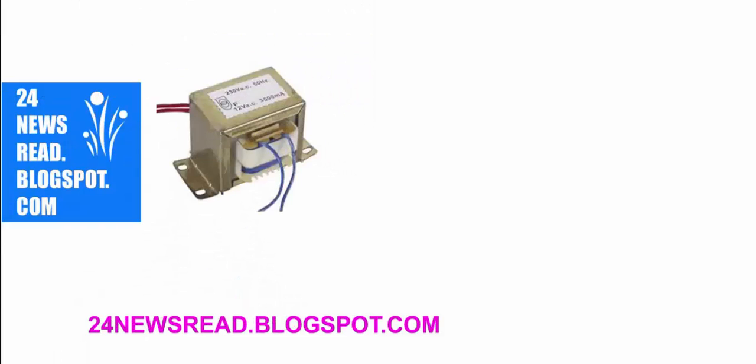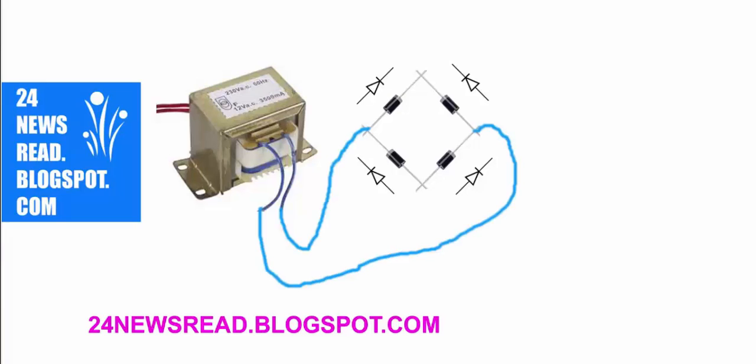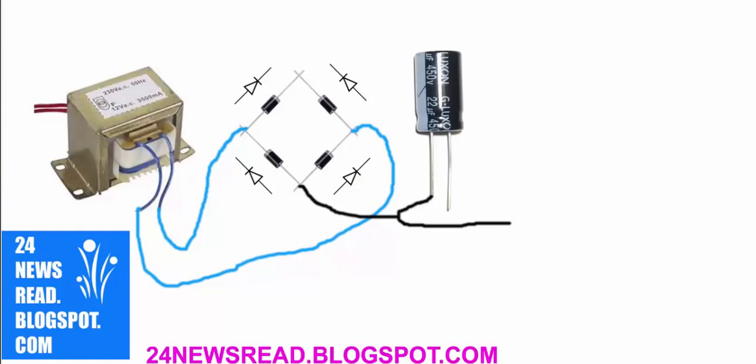First we set the transformer and set the diodes like this. Join the transformer and diode. Now capacitor minus position join, join plus position. We get 12 volt DC.